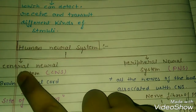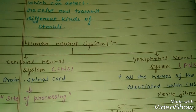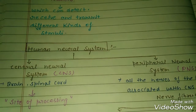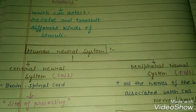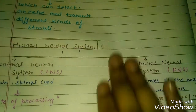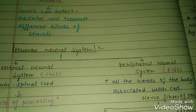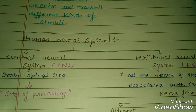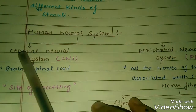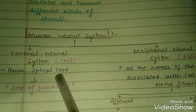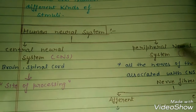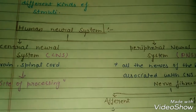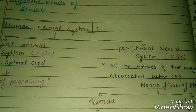Central means center, and peripheral means the outer region. In the central nervous system we have the brain and spinal cord — both are located in the center of the body. The CNS is called the site of processing, meaning this is where information is processed.